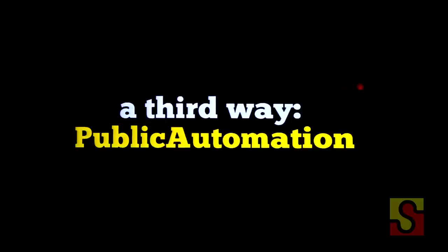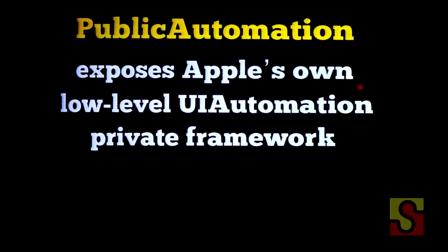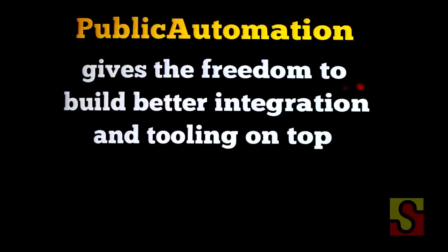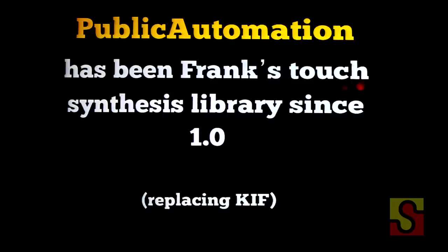So there are these two ideas — extending or replacing — and I say Public Automation is a third way. It's an Objective-C library that exposes Apple's own low level UI automation framework. I'd say it's the best of both worlds: it provides the power of Apple's touch synthesis implementation — these guys can get really into the guts of their platform and do great synthesis — but it gives everyone the freedom to build better integration and tooling on top of that. I don't actually think Apple are that clued up as to how to make a really good testing tool, and that's okay — they can give us the low level tools we need, and then we can build the integration and tooling on top.